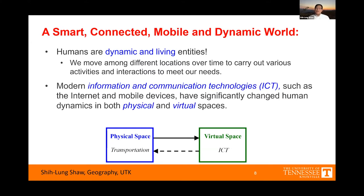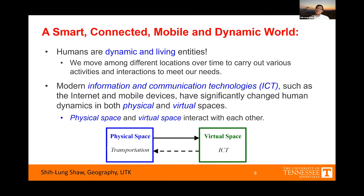Especially in recent years, modern information and communication technologies (ICTs) such as the internet and mobile devices have significantly changed human dynamics in both physical space and virtual space. In physical space we use transportation to move between different locations and places; in virtual space we use ICTs to navigate between different virtual places — for example, from a Facebook page to Twitter to a Zoom meeting. It is important to keep in mind that what we do in physical space is not independent from what we do in virtual space; these human activities and interactions in physical space and virtual space influence and interact with each other.